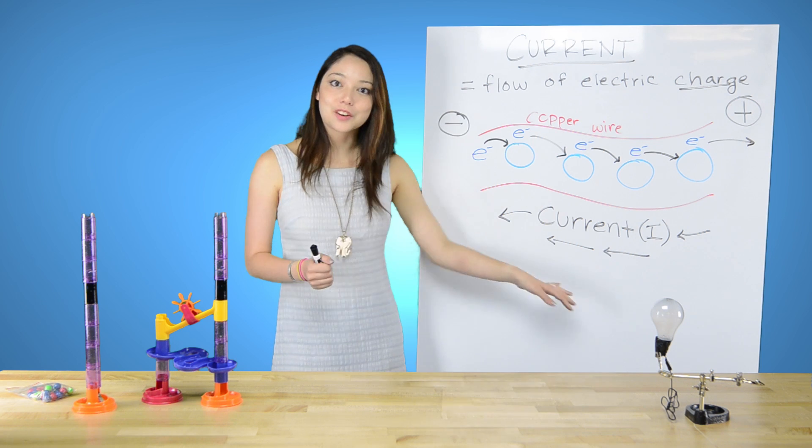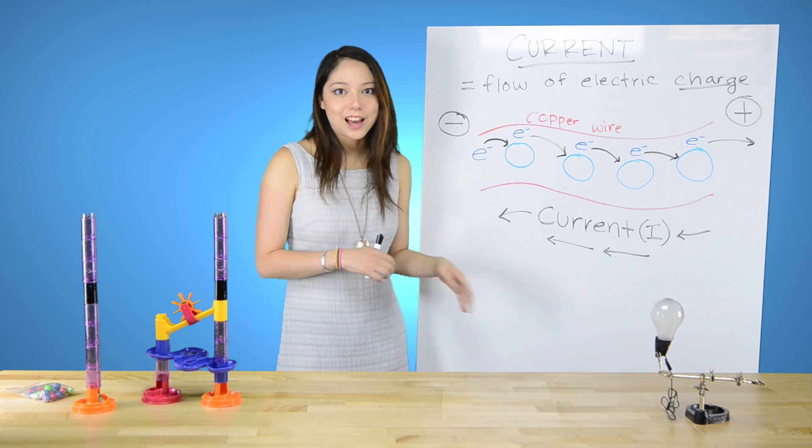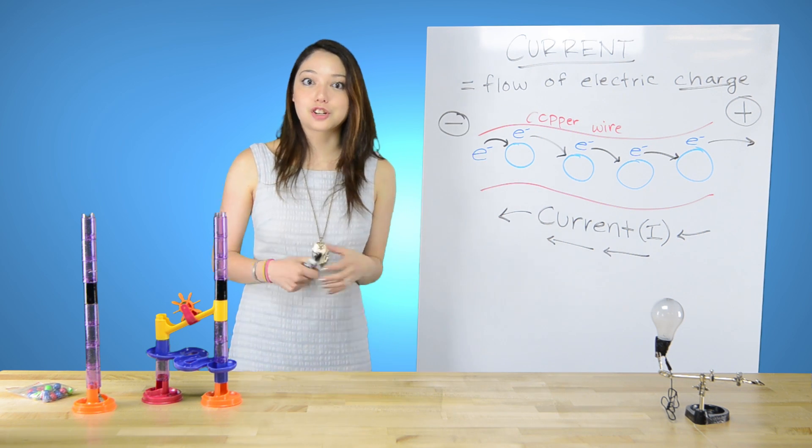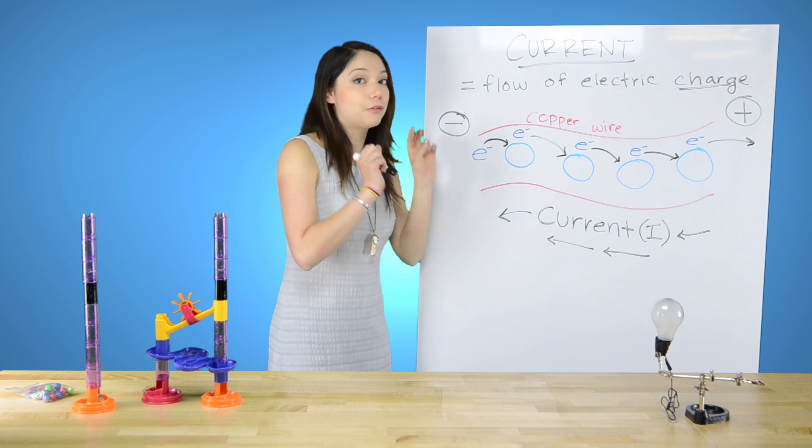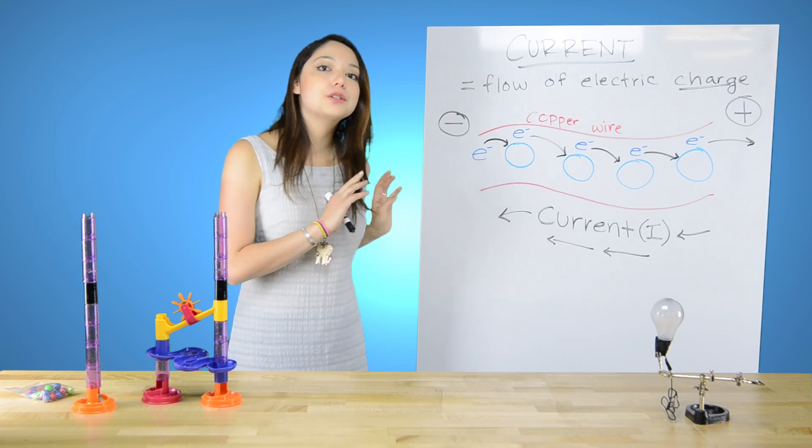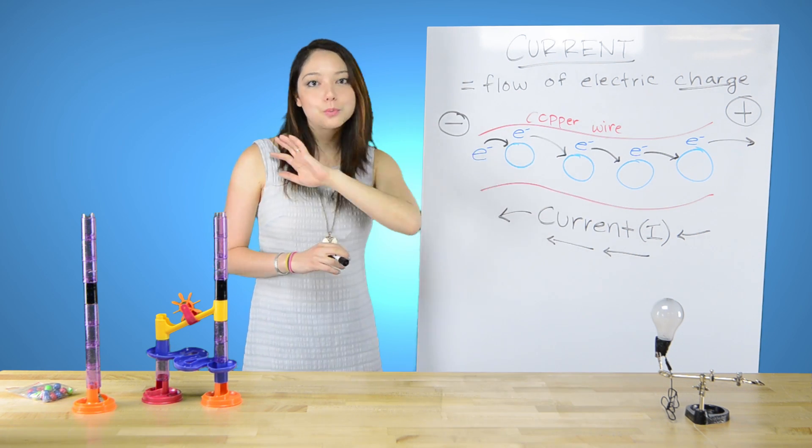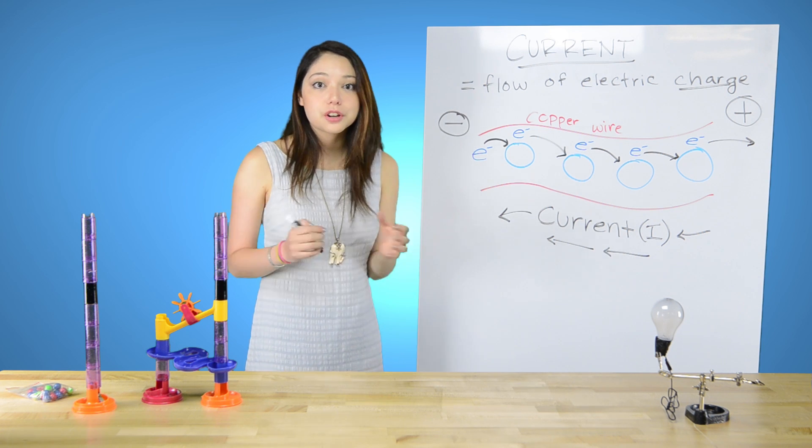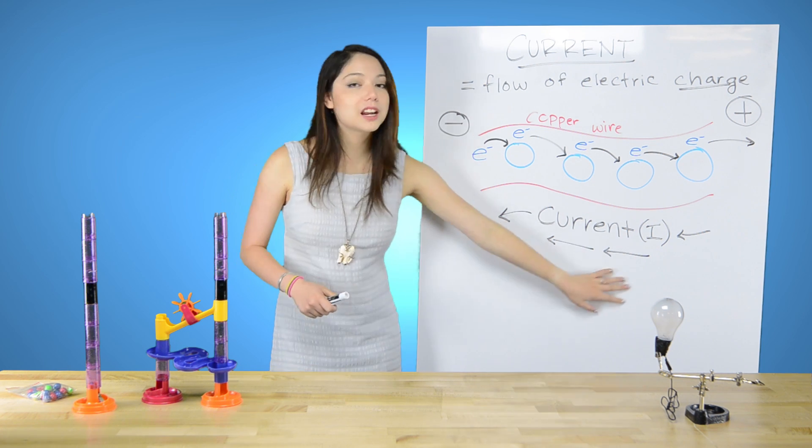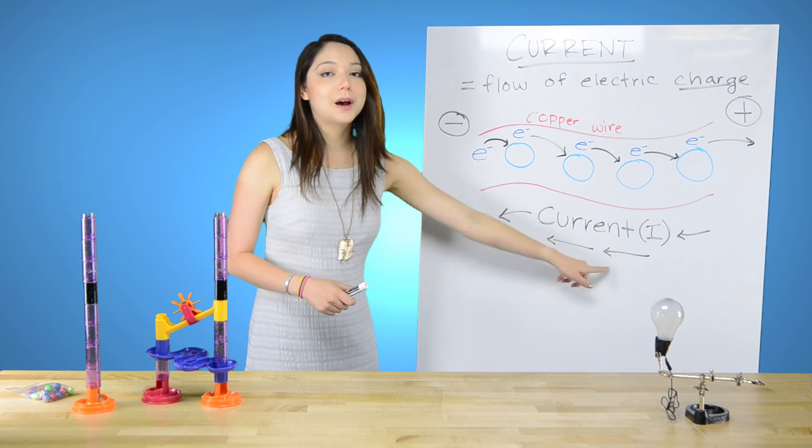And then 100 years of scientific research was done on top of that before the discovery of the electron, and we realized that really the flow, the physical flow, was going in the opposite direction. And by that point, it was far too late to go back and change all the journals. And so current is always denoted going from positive to negative.